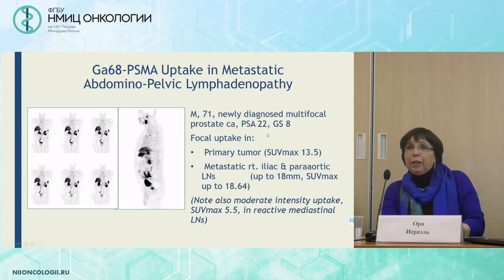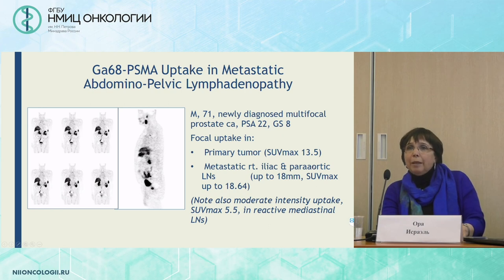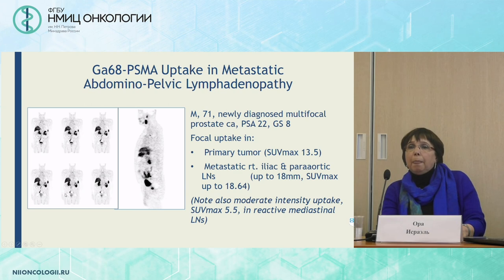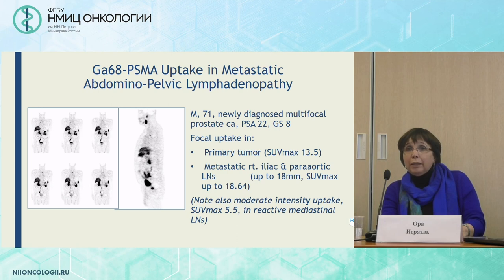Abdominal-pelvic lymphadenopathy can also occur, and we see it more and more since we do whole-body PSMA imaging. This is a patient at staging with PSA 22 and Gleason score 8. We see uptake in the primary tumor and also in metastatic lymph nodes up to 80 mm in size in the iliac and para-aortic region. Note also that we see uptake of lower intensity in the mediastinum, which we reported as reactive mediastinal lymph nodes.